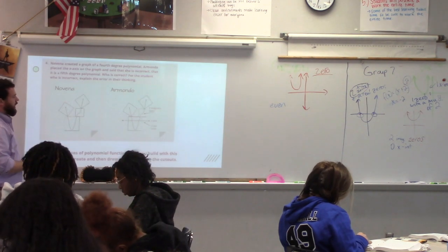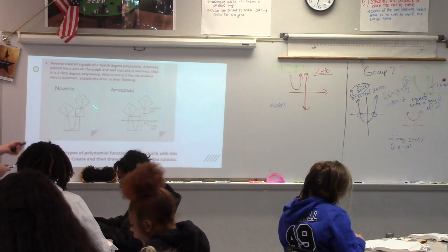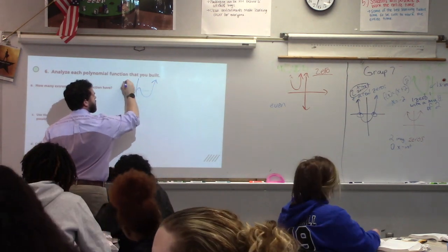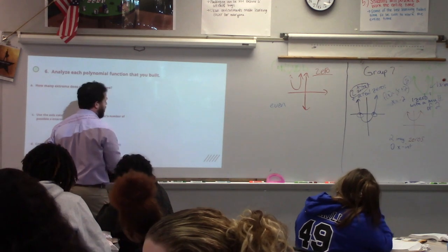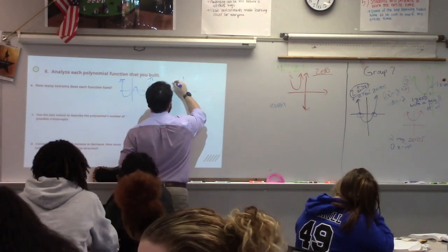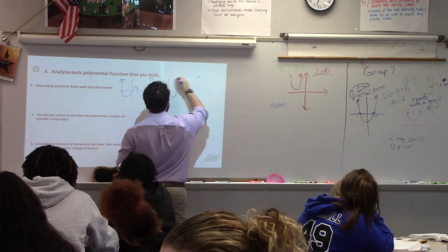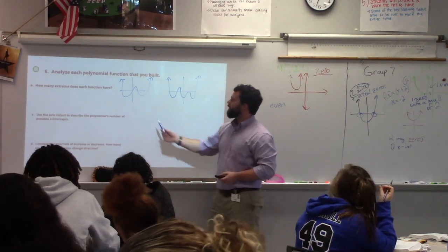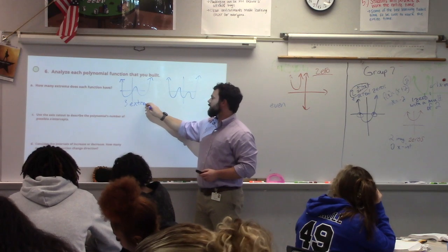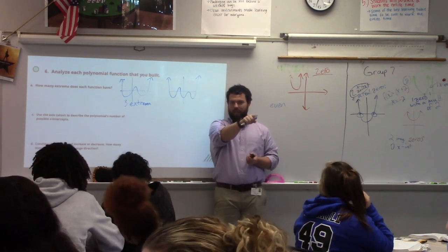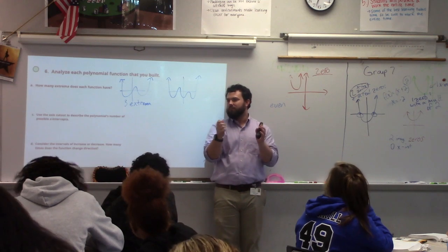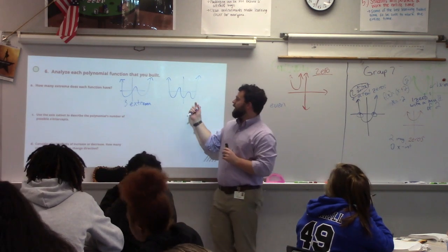Analyze each polynomial function that you build. It's asking about other types of polynomial functions with this end behavior, so I'm going to sketch out a couple with similar end behavior. How many extrema does each function have? The extrema are the turning points, or the relative max and min. Extrema is a general term for max or min - think 'extreme.' How many extrema does this one have?